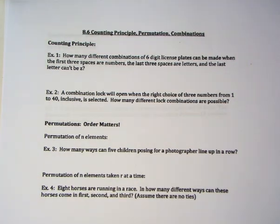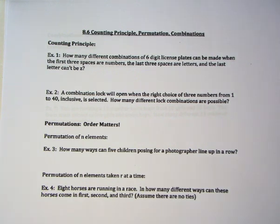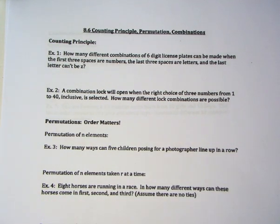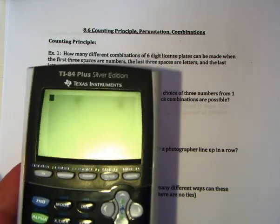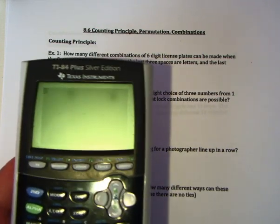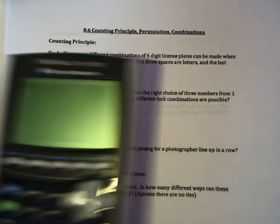We're going to talk about how many ways things can happen. I alluded to a horse race last time, and you'll see an example like that in example four. This is one of those lessons where some students pick it up really quickly, some struggle a little bit, and that's okay. Your calculator is going to do most of the work - you won't have to do hardly any computation. The thinking is: what do you have to type into the calculator?